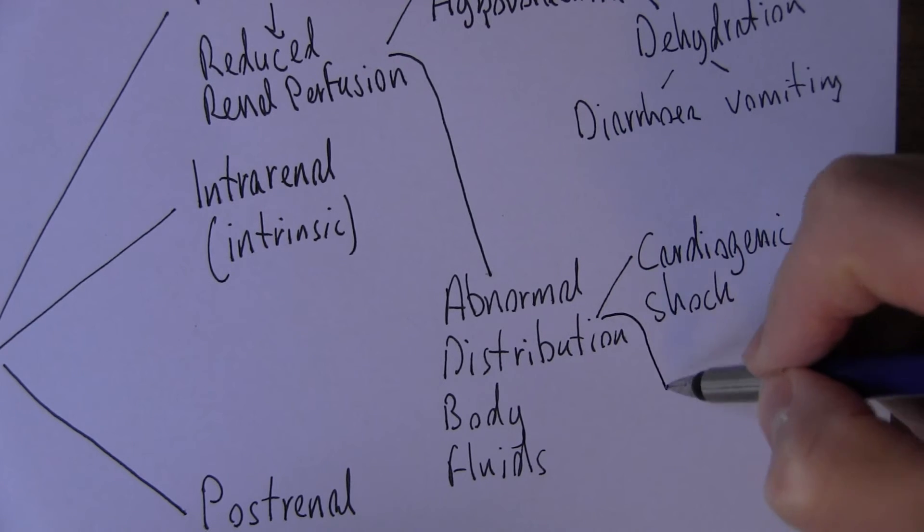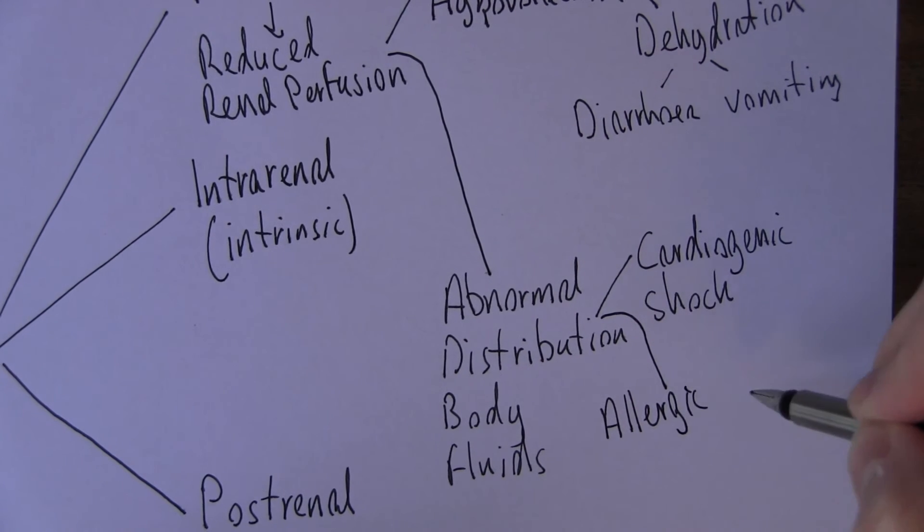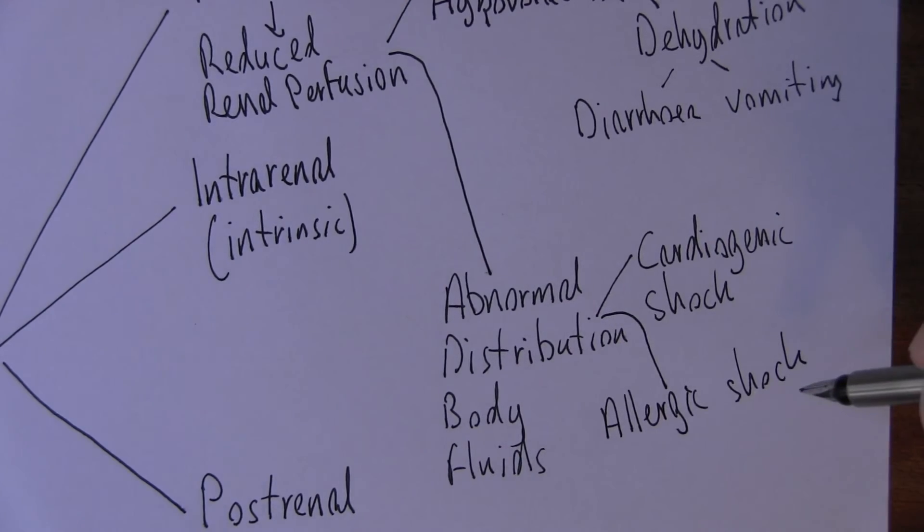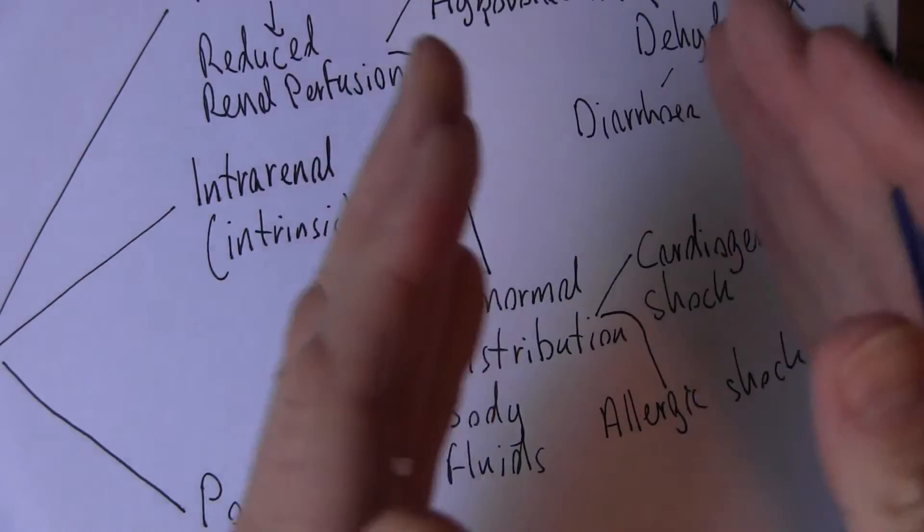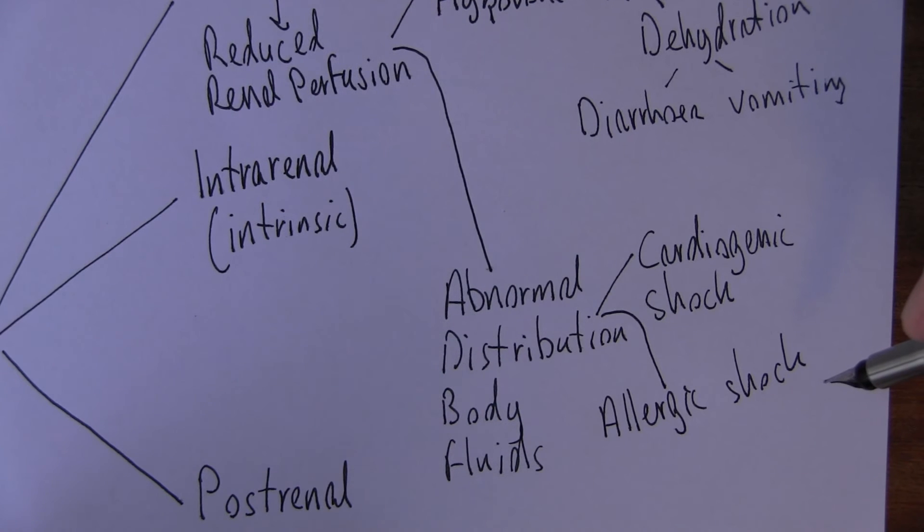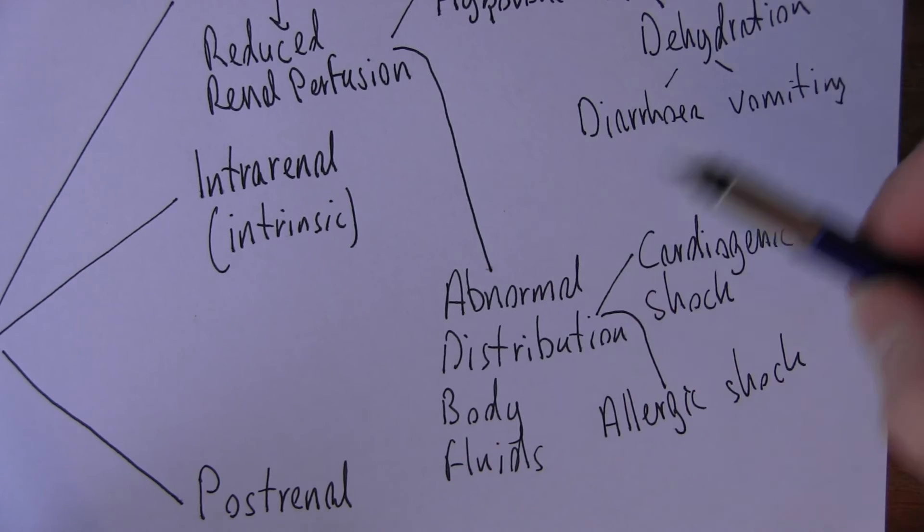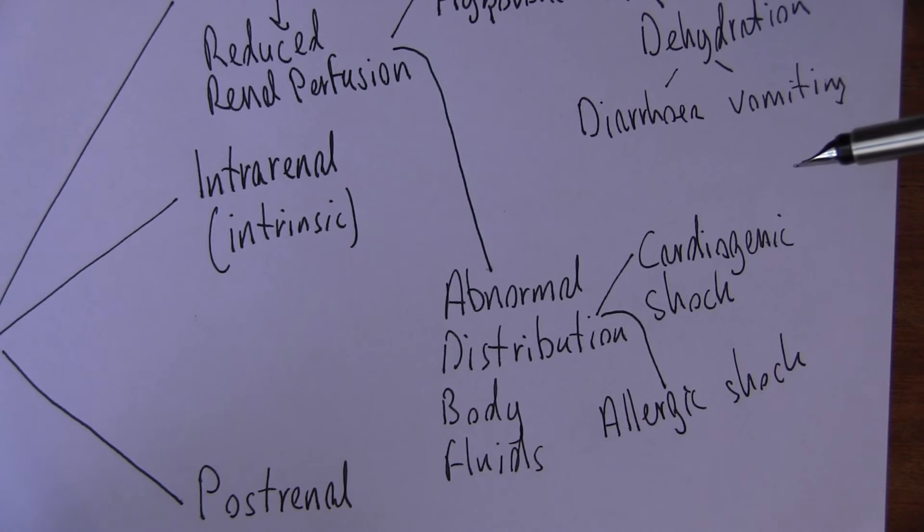Now also allergic, allergic shock if it's prolonged. Because in allergic shock there's a vasodilation and that drops the blood pressure. And when you drop the blood pressure you drop the perfusion of the tissues, including the perfusion of the kidneys. These are sometimes called distributive shocks. The fluid is not properly distributed as it should be in the physiological situation.